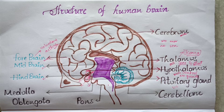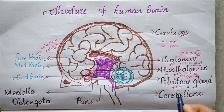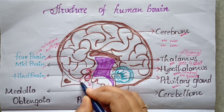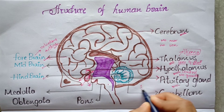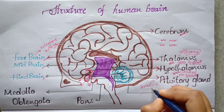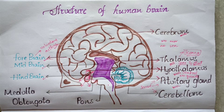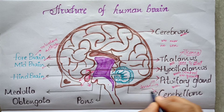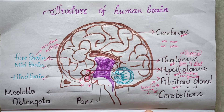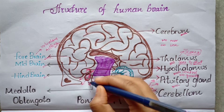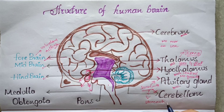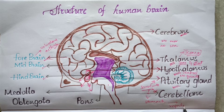The pituitary gland's main function is to release hormones. It senses the body's needs and senses different body organs. The pituitary gland releases hormones and sends them to the organs of the body, which then regulate their functions to maintain an appropriate environment.